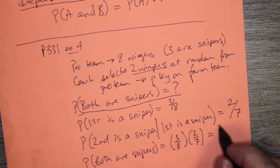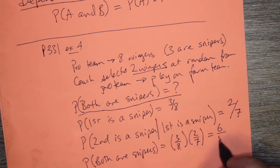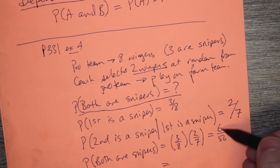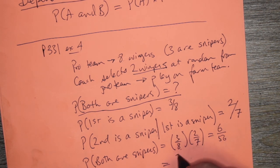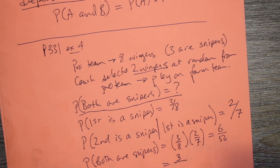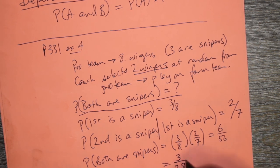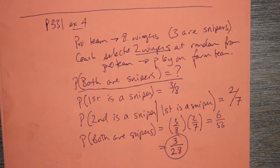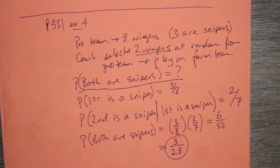And that's three times two is six. Eight times seven is 56. Now we need to simplify our fraction. Both are divisible by two. So then, six divided by two is three, and 56 divided by two is 28. And there's your probability that both hockey players are snipers.